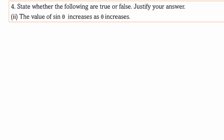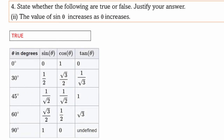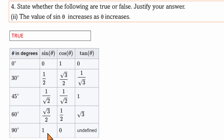Part 2: The value of sinθ increases as θ increases. Let's check the table. As θ goes from 0° to 30° to 45° to 60° to 90°, the sin values go from 0 to half to 1 by root 2 to root 3 by 2 to 1. So sinθ increases when you go from 0 to 90. This is true.